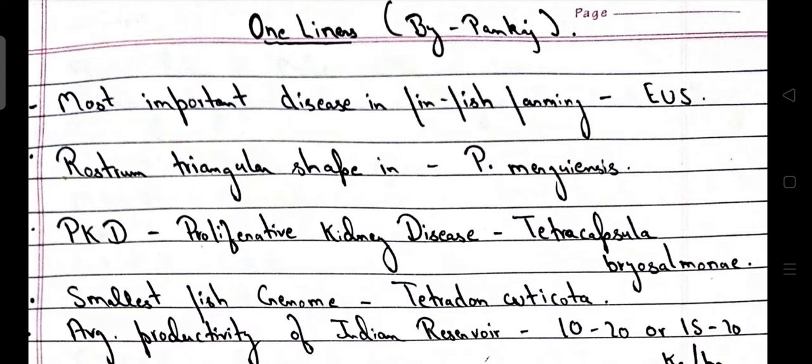First of all, the most important disease in finfish farming is EUS — Epizootic Ulcerative Syndrome. The drug used for treatment of EUS is Cyfax, developed by CIFA — Central Institute for Freshwater Aquaculture. Its headquarter is in Bhubaneswar, Odisha.